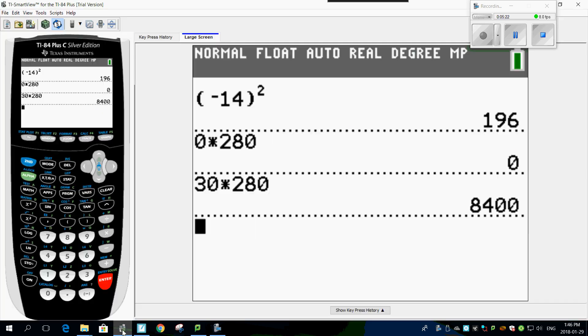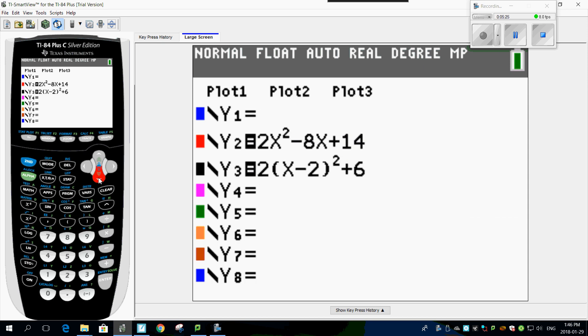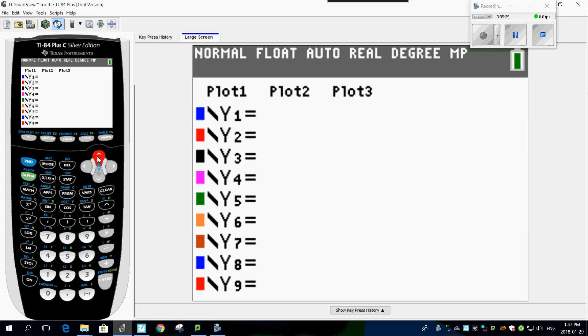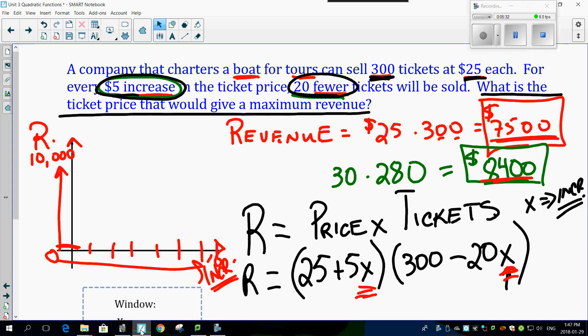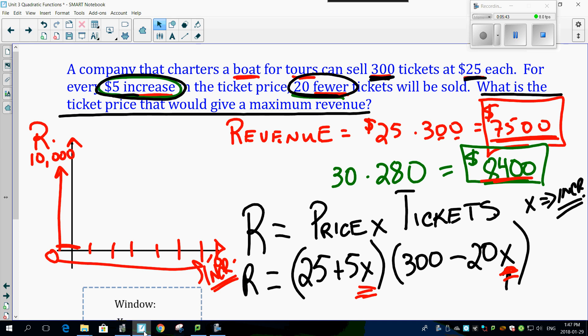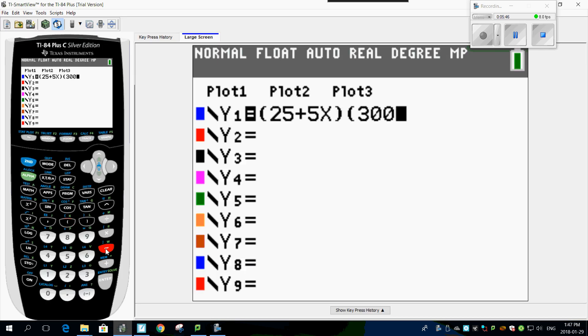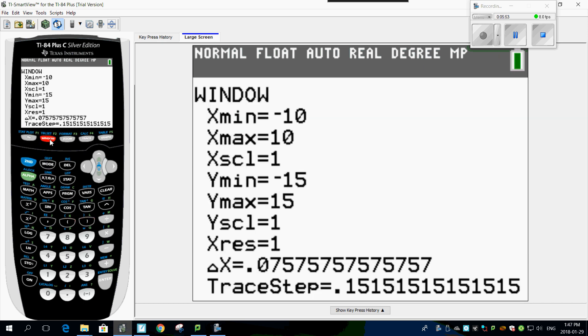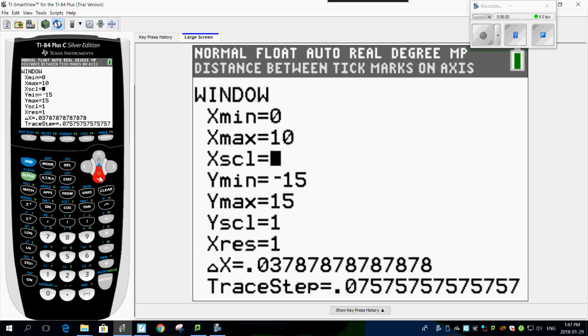Y equals. Clear all these other values out of here. Put in exactly what you see here. This is 25 plus 5x, bracket, 25 plus 5x bracket. And my other one was 300 minus 20x, 300 minus 20x. Now before I hit graph, I'm going to go to my windows because I know my windows are wrong. My x values, 0 to 10, good enough. My y minimum, let's go from 0 again to a y maximum, we set up $10,000. Let's graph it and let's see what happens.